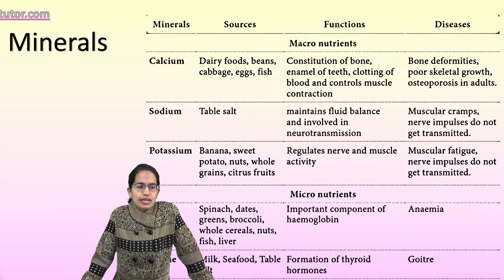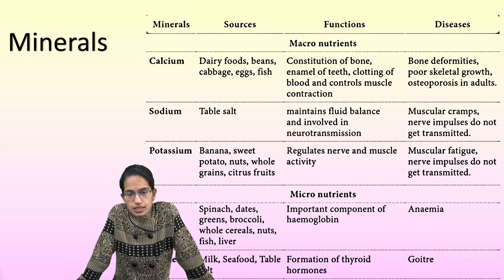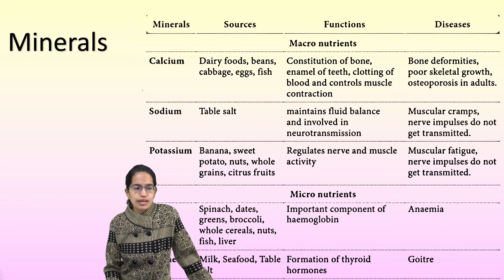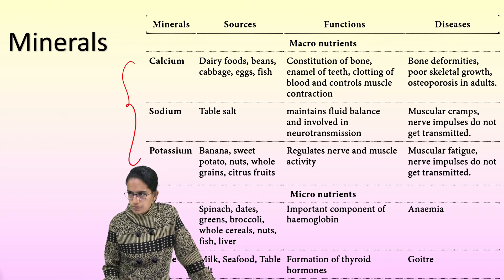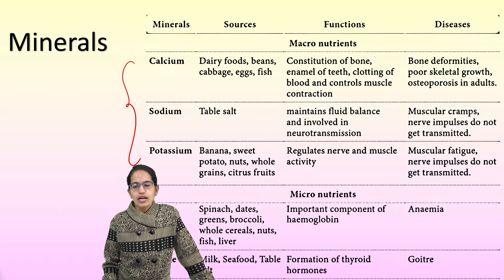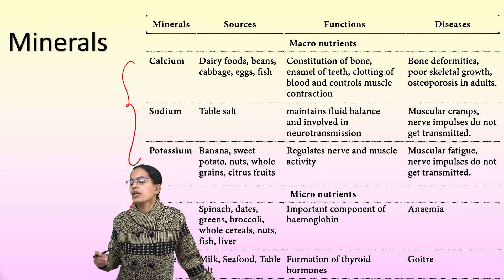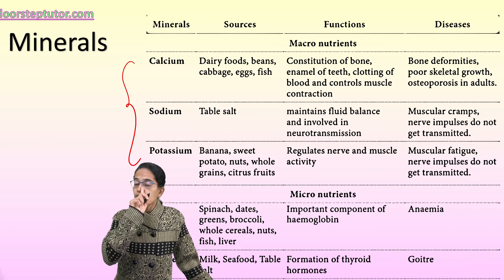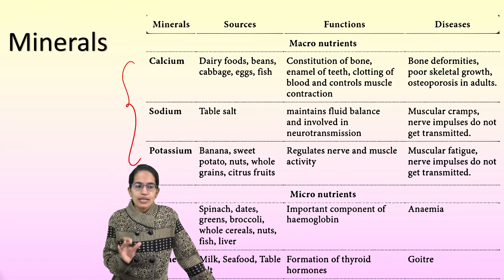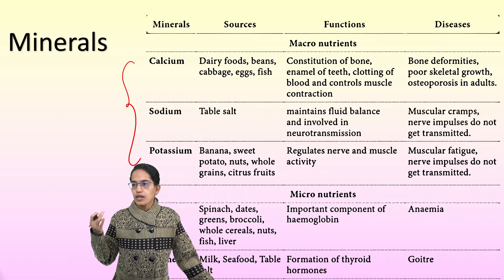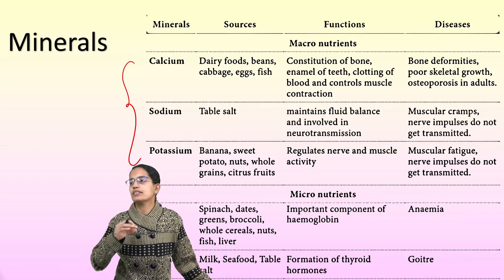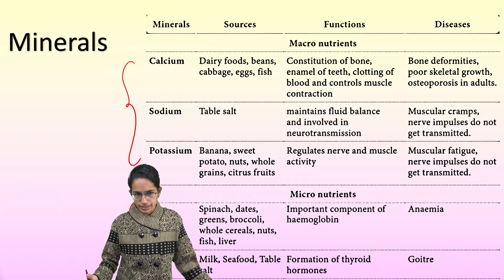Among minerals, we have macronutrients and micronutrients. Major minerals include calcium, sodium, and potassium. Minor minerals include iron and iodine. Vitamins are organic; minerals are inorganic. Sodium is used to maintain water level, salt balance, transmission of nerve impulses, muscle contraction, and reproduction. Calcium is required for healthy bones.